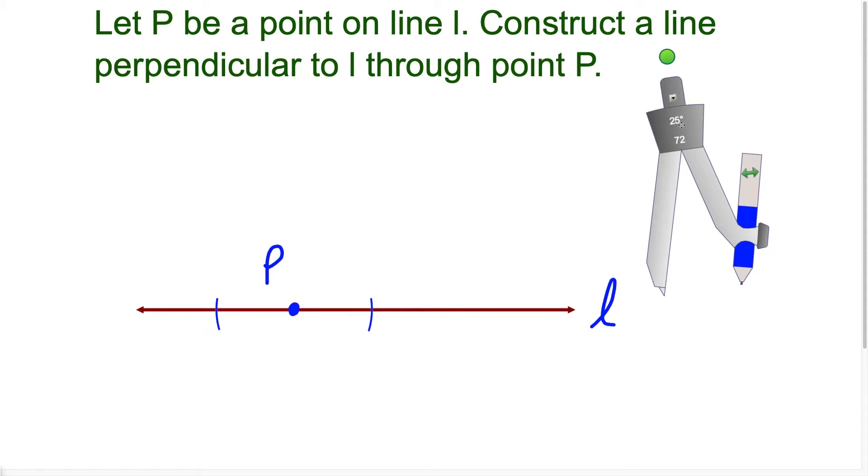And now we can label this. So the points of intersection, let's say we call this point A and B. So we have A is over here and we have point B is over here.